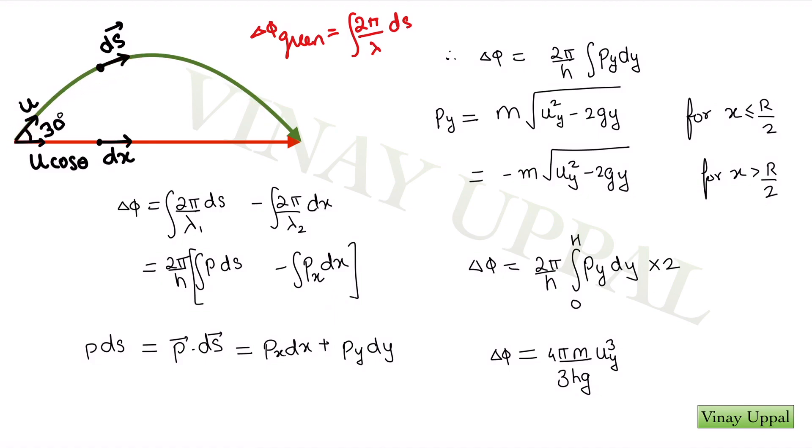Now, a very neat trick or a neat way to do this is to recognize that the term here p ds can be written as a dot product. The reason is that momentum is parallel to the infinitesimal displacement. Momentum is always tangential to the trajectory, to the infinitesimal displacement. Therefore, I can write p ds as p·ds which I can further break it down into px dx plus py dy. Because px is same for both the beams, the px terms will cancel out and we will only be left with an integral of py dy.